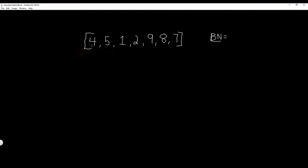So in this case, the very first item in our list is 4. We are going to assume from the get-go that 4 is the greatest number in our list. And then from here, we iterate through our list — we're going to do it with a for loop in code. We check: is 4 greater than 4? No, it's equal, so we move on to the next item.